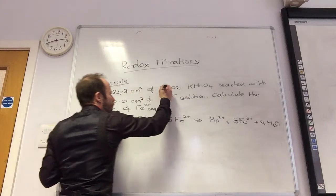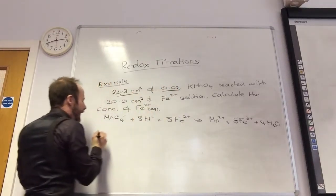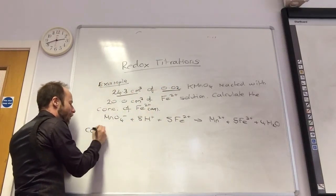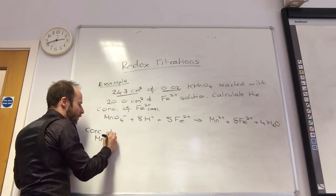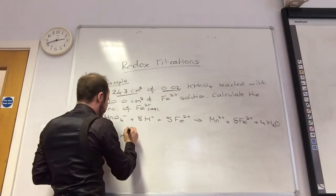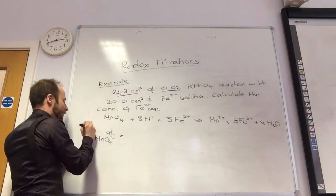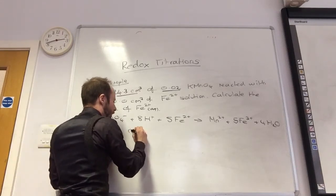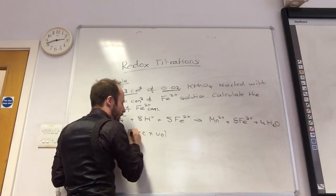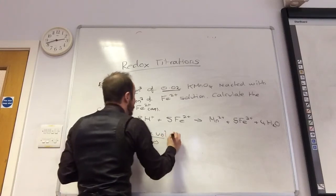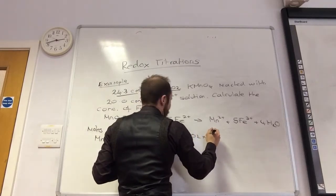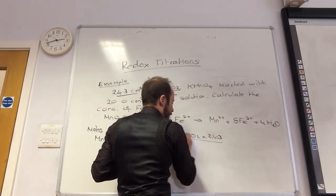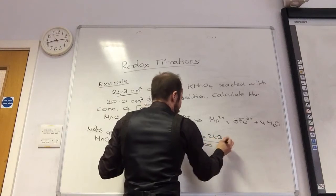I've got the concentration and the volume of KMnO4. So the first thing I work out is, oh no I don't, I work out the moles. So concentration times volume over 1000, which is 0.02 times 24 over 1000.